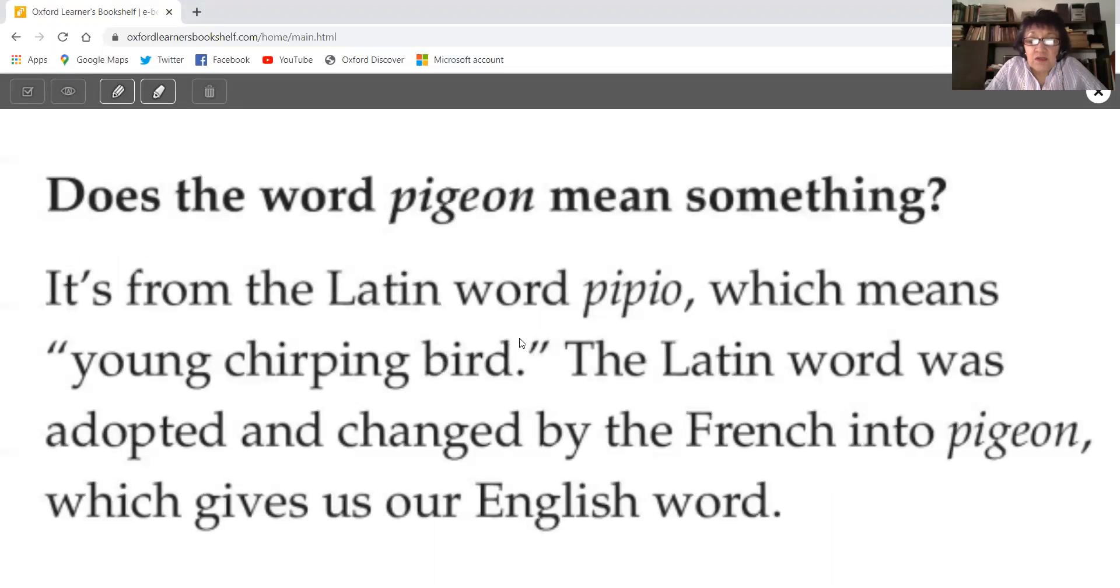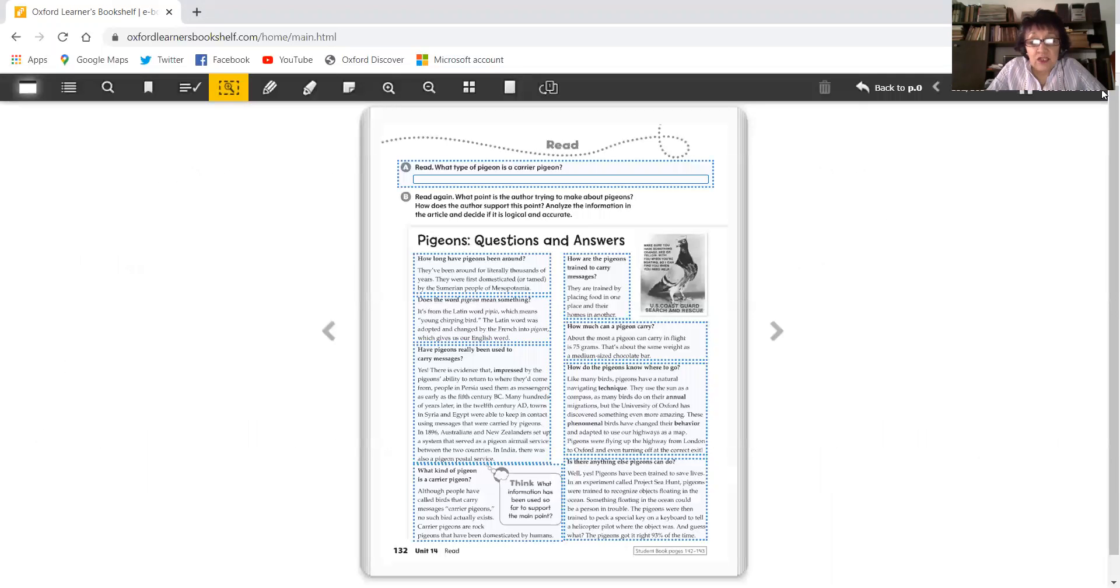Does the word pigeon mean something? It's from the Latin word pipio, which means young chirping bird. The Latin word was adopted and changed by the French into pigeon, which gives us our English word. Remember, we have words that come from other languages.